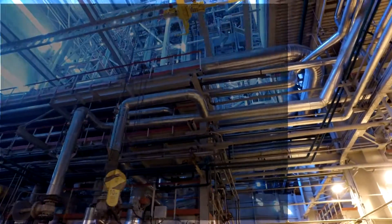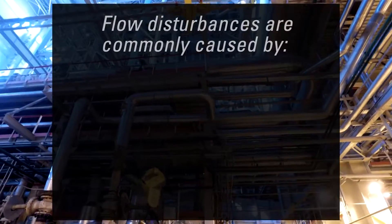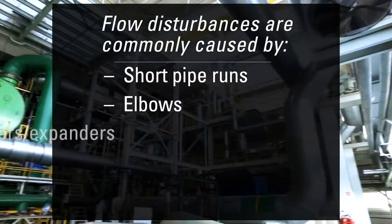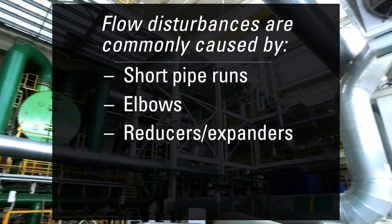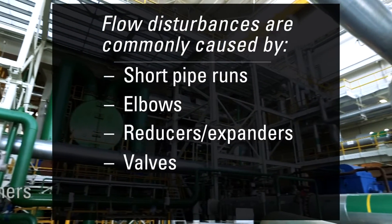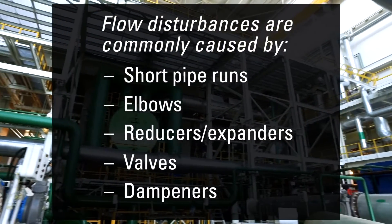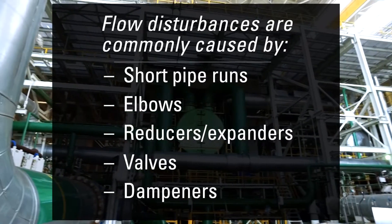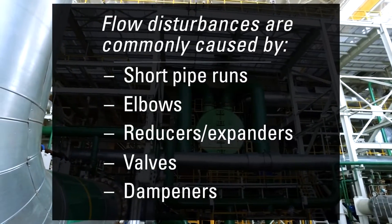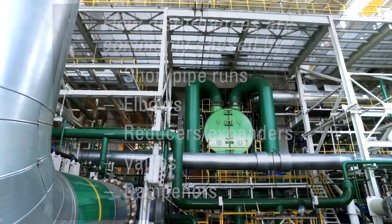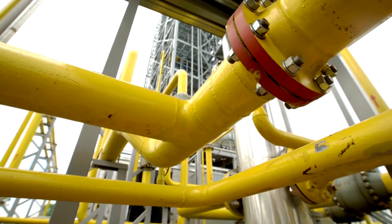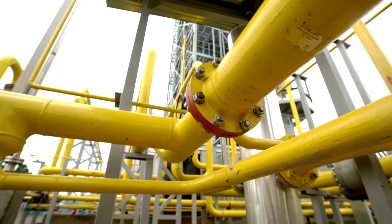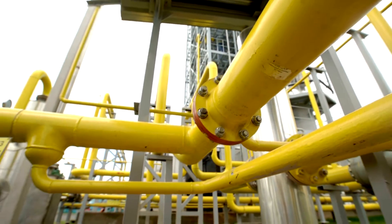However, flow disturbances caused by short pipe runs, elbows, reducers or expanders, valves and dampeners create swirling, unrepeatable flow profiles and lack of proper mixing in the flow stream that will negatively affect the accuracy and repeatability of flow meters and process control.